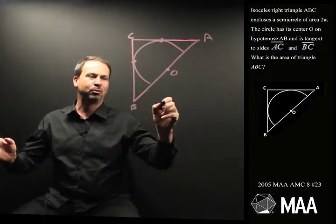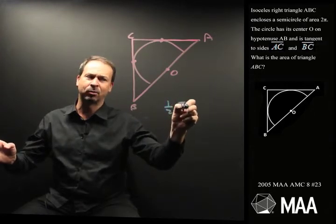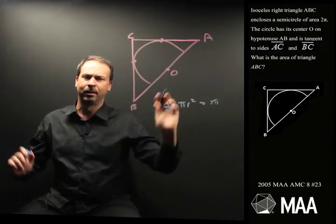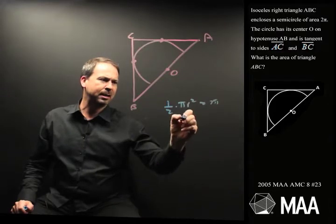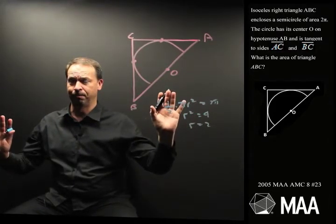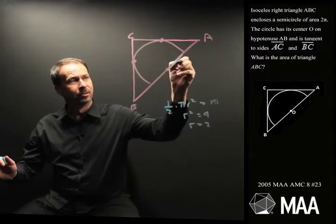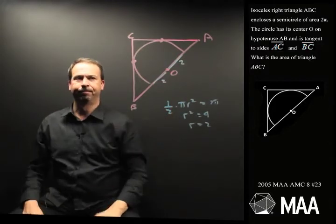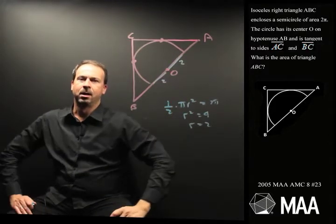So the area of the semicircle would normally be what? Half of π r squared is 2π. So a little bit of algebra tells me that r squared would have to be 4, so r is 2. It's a circle of radius 2. So that means that's 2 and that's 2. Hmm.